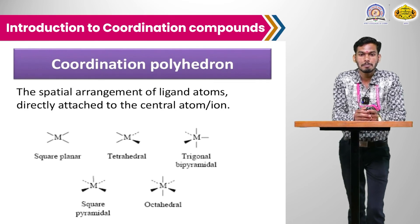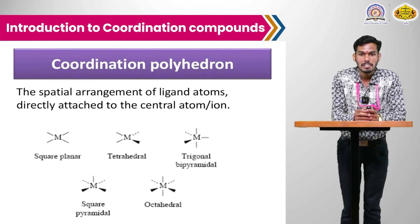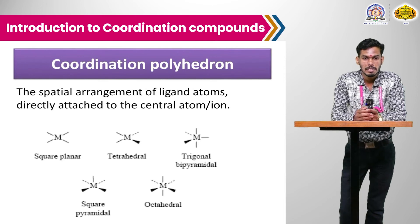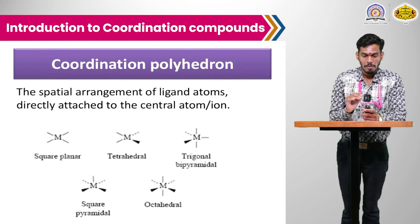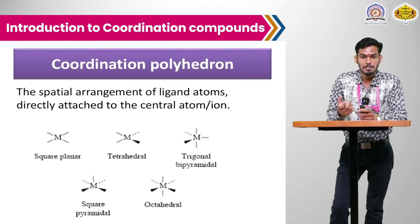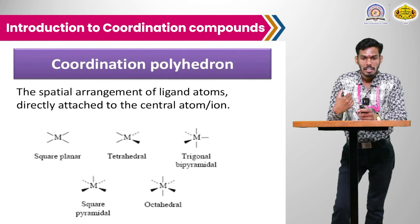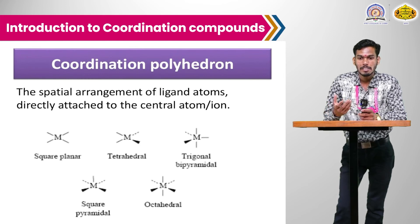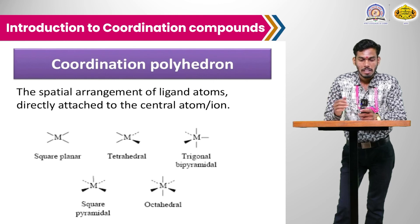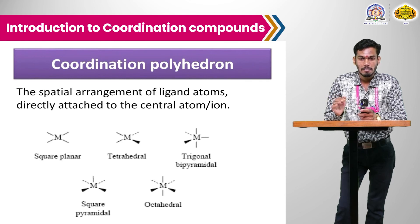The coordination polyhedron is determined by the attachment of ligands to the central metal atom. In a square planar complex, the central metal atom and all ligands are in the same plane. In a tetrahedral complex, similar to CH4, two ligands are in the plane, one above, and one below. In a trigonal bipyramidal complex, three ligands and the metal are in one plane, with one above and one below. In a square pyramidal complex, four ligands and the metal are in one plane with one ligand above. The octahedral shape is also common.